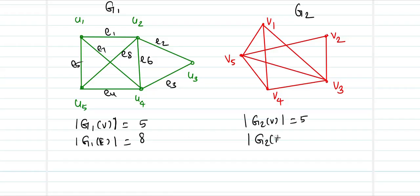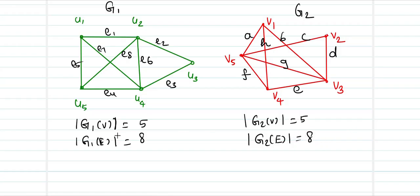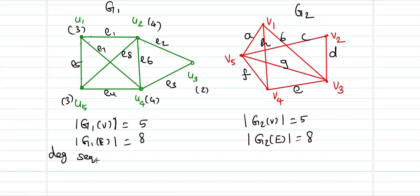G2 also has 8 edges. Now let's write the degree sequence. In G1: U1 has degree 3, the next vertex has degree 4, another has degree 2, another has degree 4, and the last has degree 3. So the degree sequence of G1 is 3, 4, 2, 4, 3.